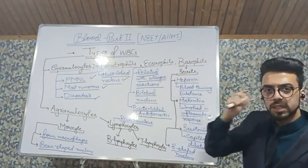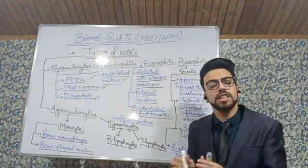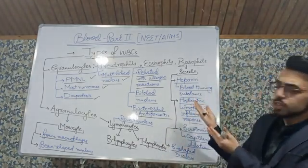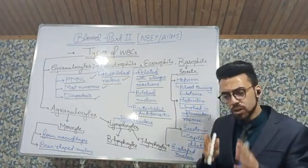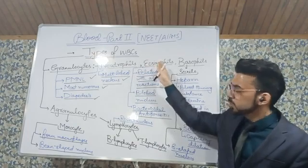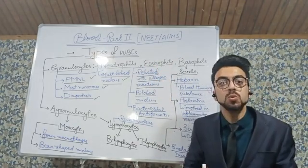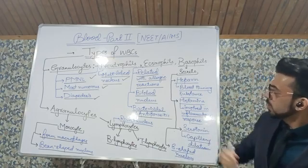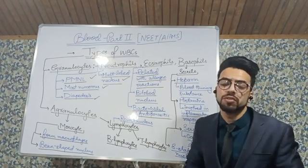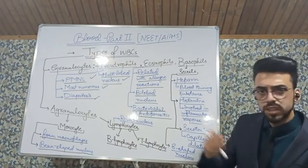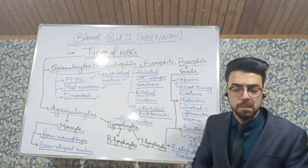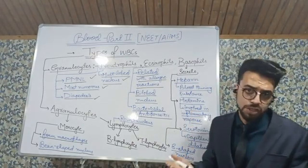Now we talk about eosinophils. Eosinophils are related with allergic reactions — whenever there are allergic reactions in the body, eosinophils are involved. When we talk about the nucleus of eosinophils, it is bilobed, having two rounded lobes. Their function is bactericidal and anti-parasitic, though their primary role is in allergic reactions.